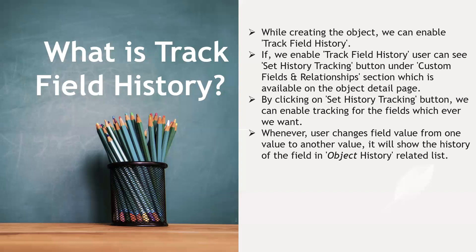We can track each and every field once we enable field history at the object level. However, fields like rich text area and text area cannot have their exact values tracked — we can only see that the value was changed, not the content. Apart from those field types, we can track every other field.